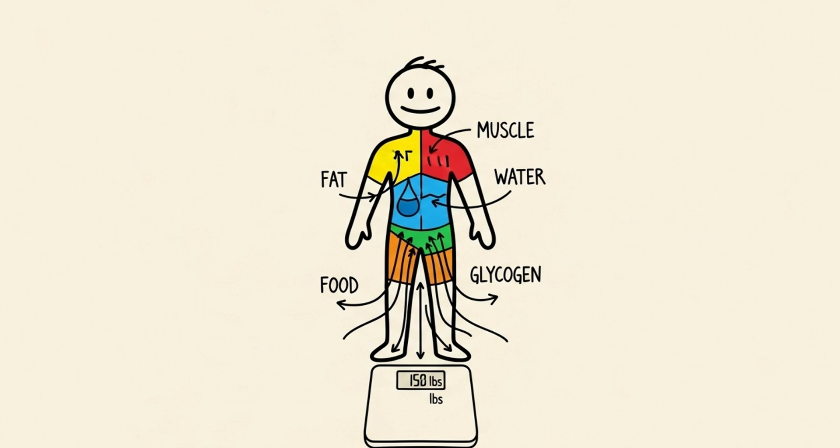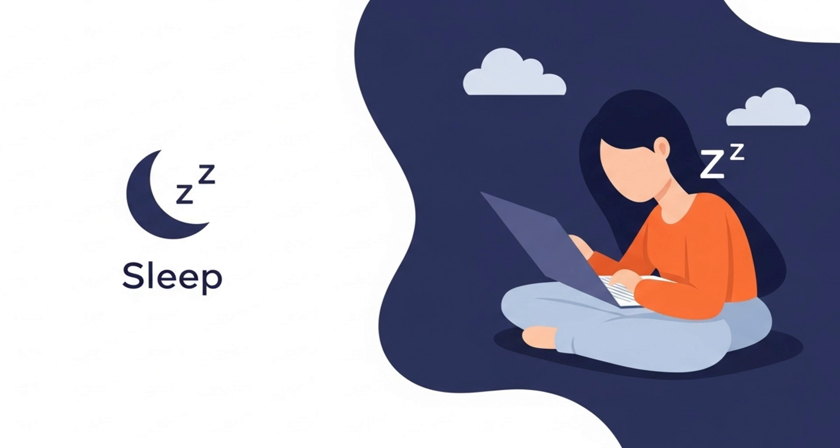Your weight on the scale is the sum of everything. Your fat, muscle, bones, organs, all the water in your system, all the food in your gut, and your stored glycogen. And that number fluctuates wildly from day to day based on four things.